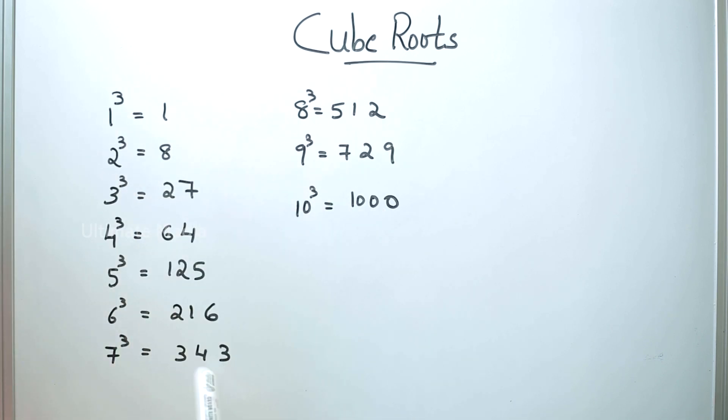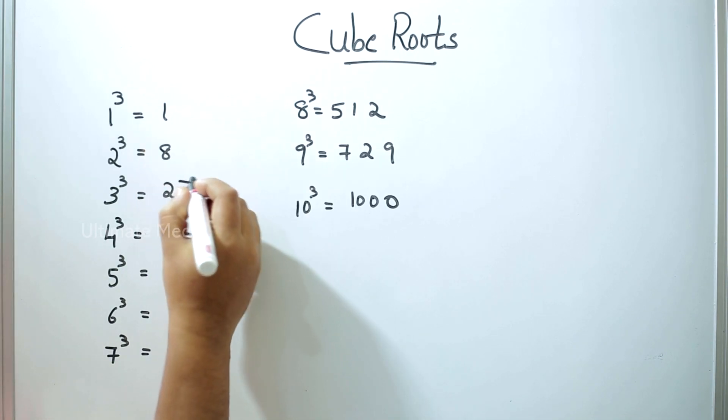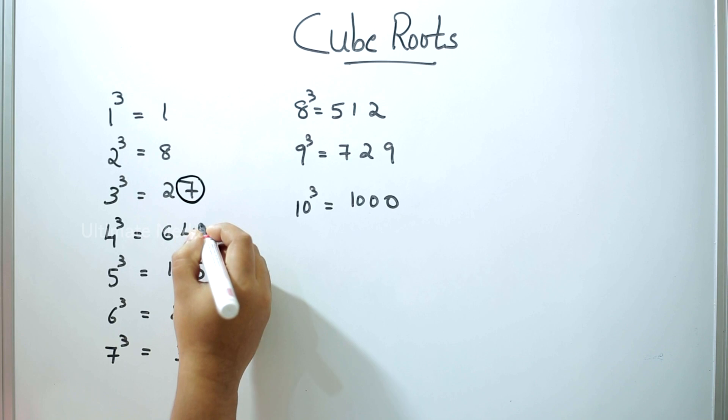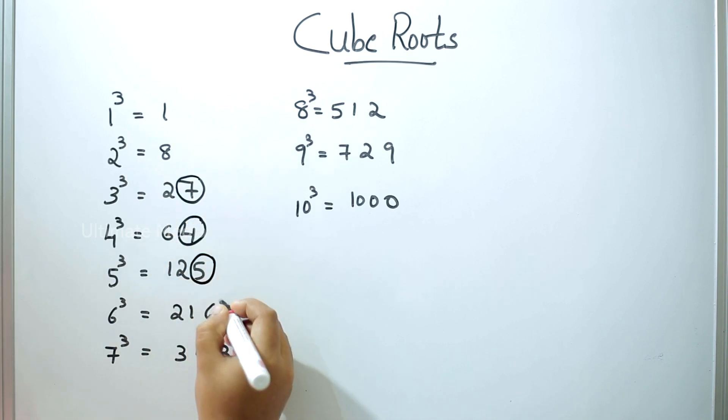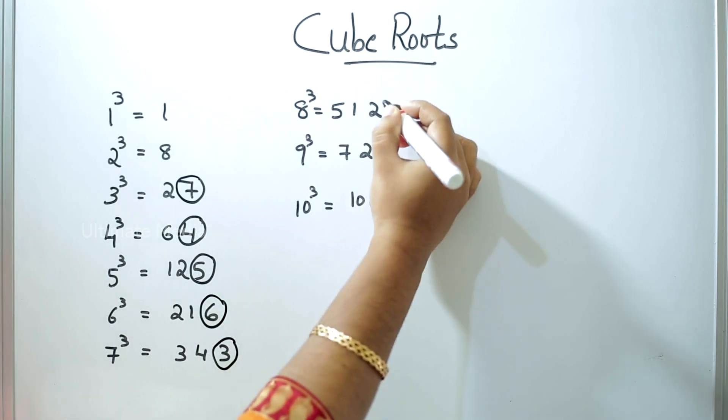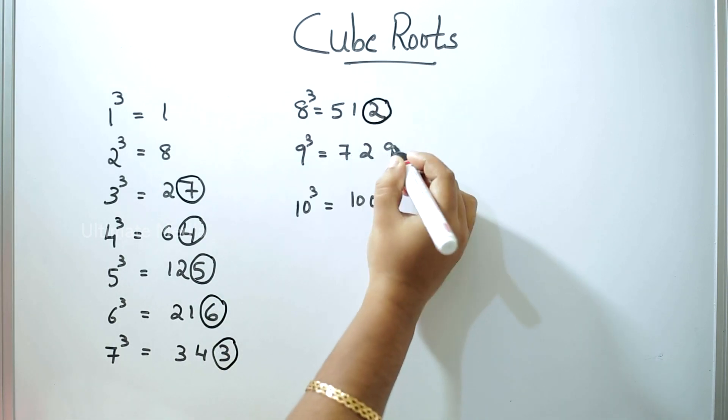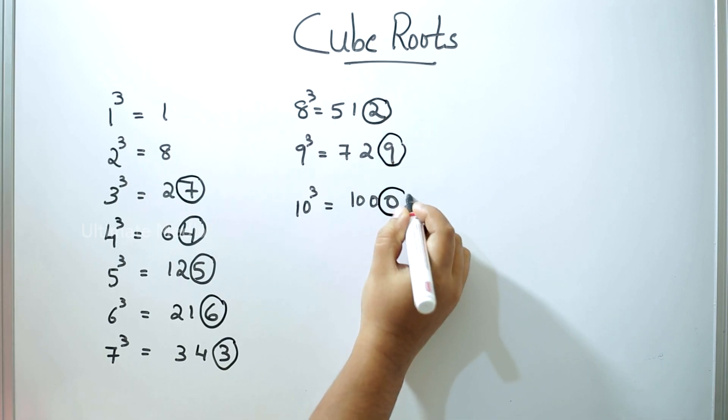What did we do here? Let's look at the last digits. 3 is 7, 4 is 4, 5 is 5, 6 is 6, 7 is 3, 8 is 2, 9 is 9, 0 is 0.